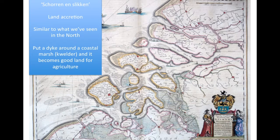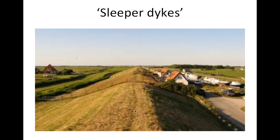Basically what they did is put a dike around the coastal marsh, and it becomes good agricultural land. Which is why, if you travel through Zeeland, you see land on one side, a dike in the middle, and land on the other side — and if you don't know the story, you wonder what that dike is doing there. It's an old dike: at one time there was ocean on one side, a dike here, and land on the other side. As deposition continued, a new dike was built around it, and more land was won.